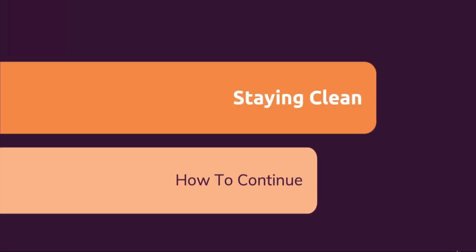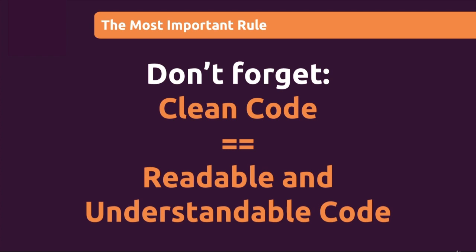This course section is about staying clean. The most important rule which you must not forget is that clean code equals readable and understandable code. Whatever helps this goal — whenever you do something which improves readability and understandability, it makes your code cleaner. It's not about checking 10 different rules which you apply to your code. It is about writing readable and understandable code. That is the ultimate goal.